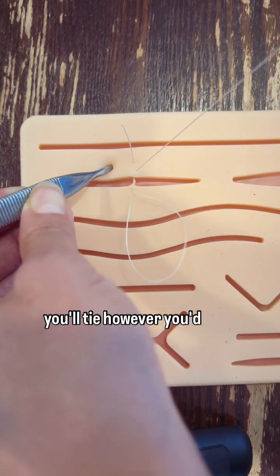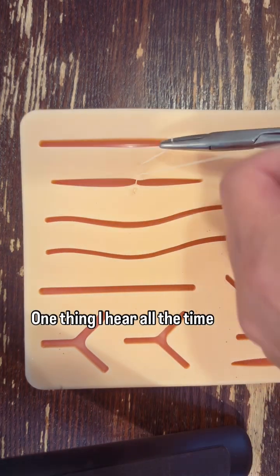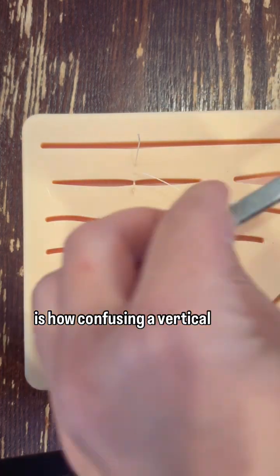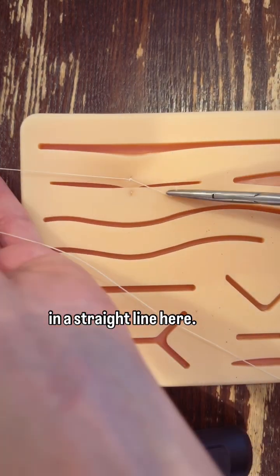Then you'll pull through and tie however you'd like. One thing I hear all the time is how confusing a vertical mattress versus horizontal mattress is. The vertical is in a straight line here, so you can see how nice that comes together.